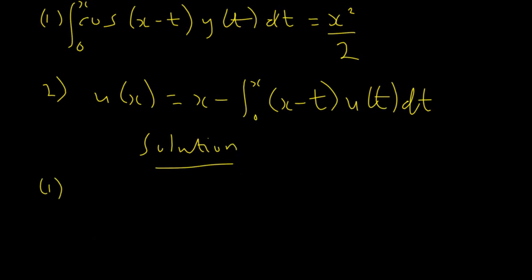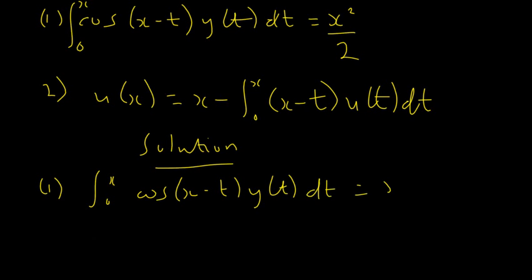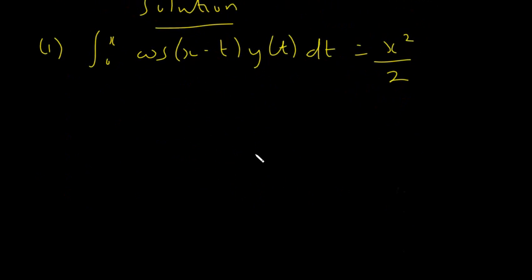For the solution, let me rewrite the first question: the integral from 0 to x of cosine of (x minus t) times y(t) dt equals x squared over 2. In solving this Volterra integral equation, what we are trying to do is break this integral equation down into a differential equation — a Cauchy problem — and then solve that differential equation.